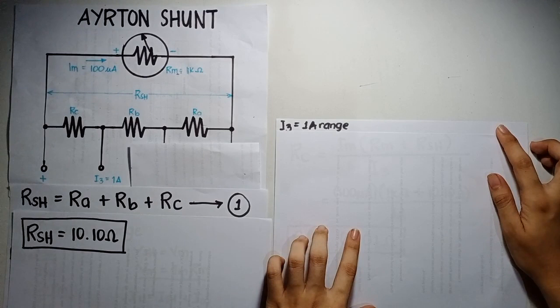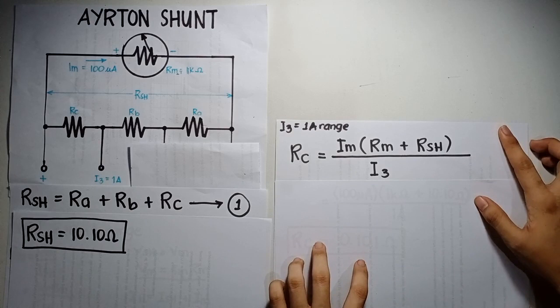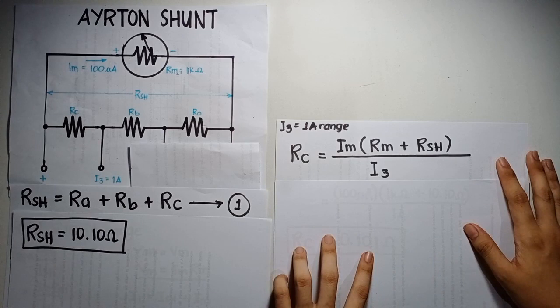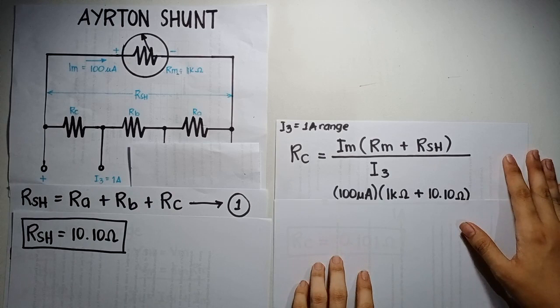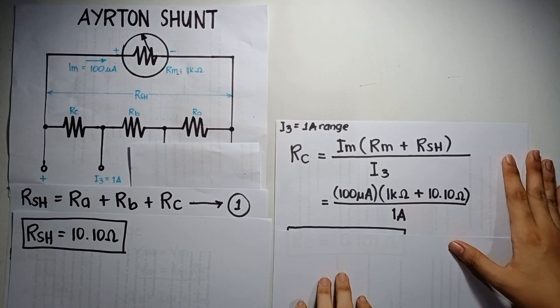Now, we will proceed on the 1 ampere range. Using the same method on the previous calculation, we can get the equation for Rc, which is Im times the quantity Rm plus RSH all over I3. Substitute the given values. And we can get the value for Rc, which is 0.101 ohm.